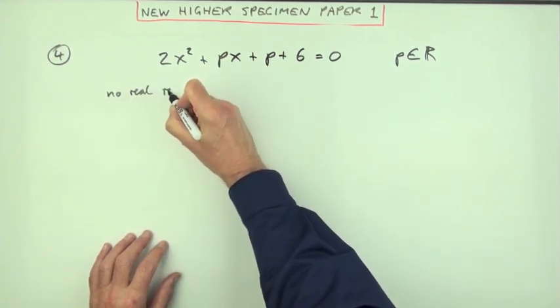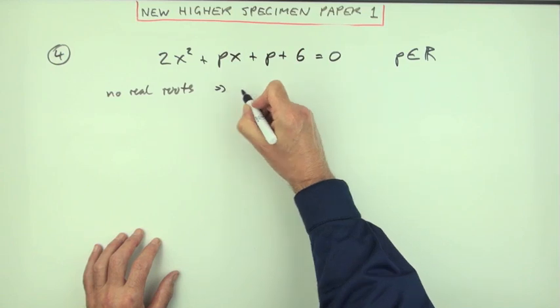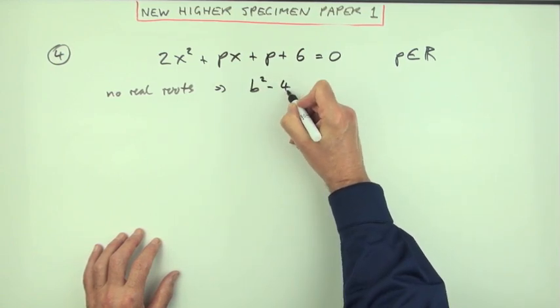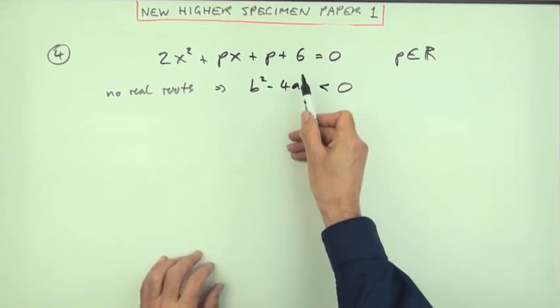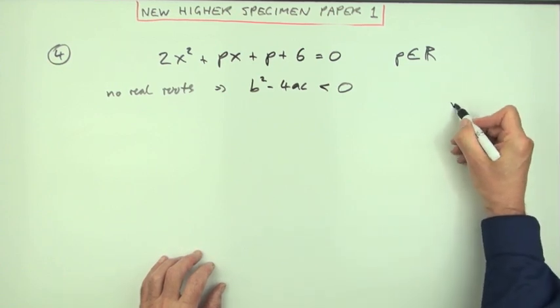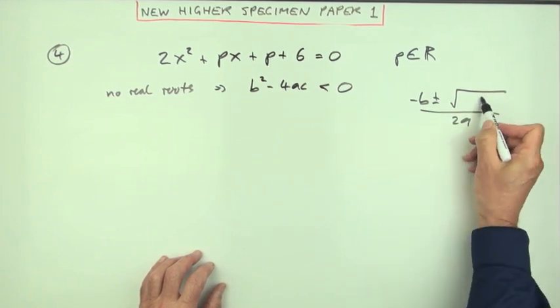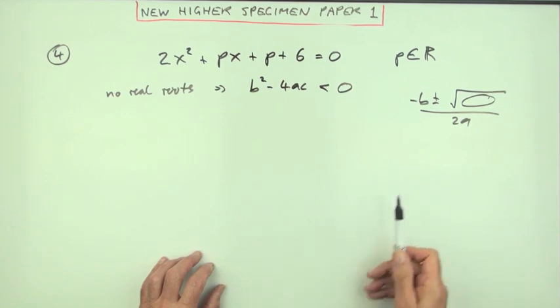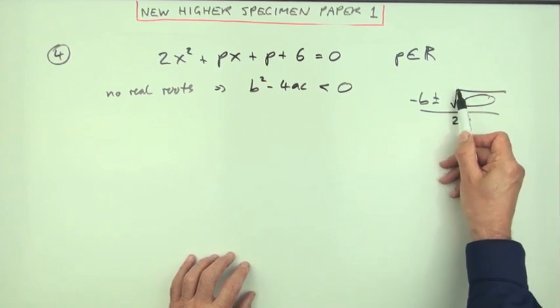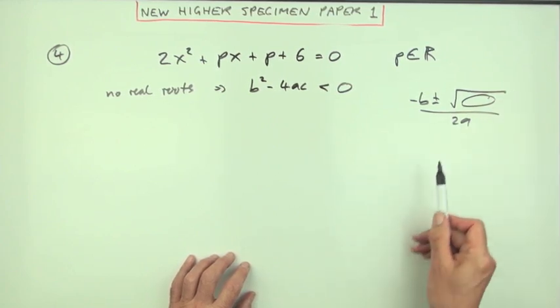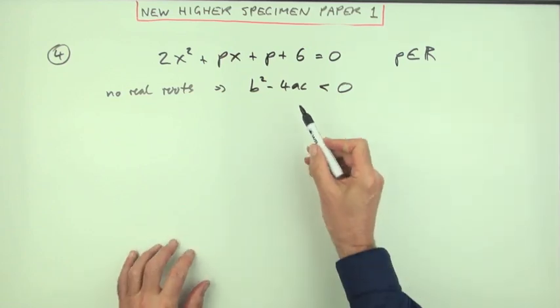No real roots means the discriminant b² - 4ac has to be less than zero. That's the portion of the quadratic formula that goes inside the square root: -b ± √(b² - 4ac) over 2a. If that's less than zero, if it's negative, then you're not going to get a square root, well strictly speaking not one that's real anyway.